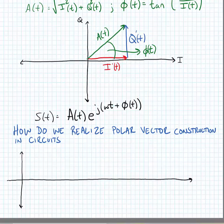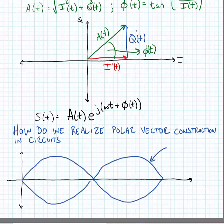So a basic question is: how do we realize polar vector construction in circuits? So let's look at a signal that has maybe some amplitude modulation and phase modulation in it. If a circuit has amplitude modulation, it will have an envelope, and the RF carrier waveform might fit inside of this envelope.